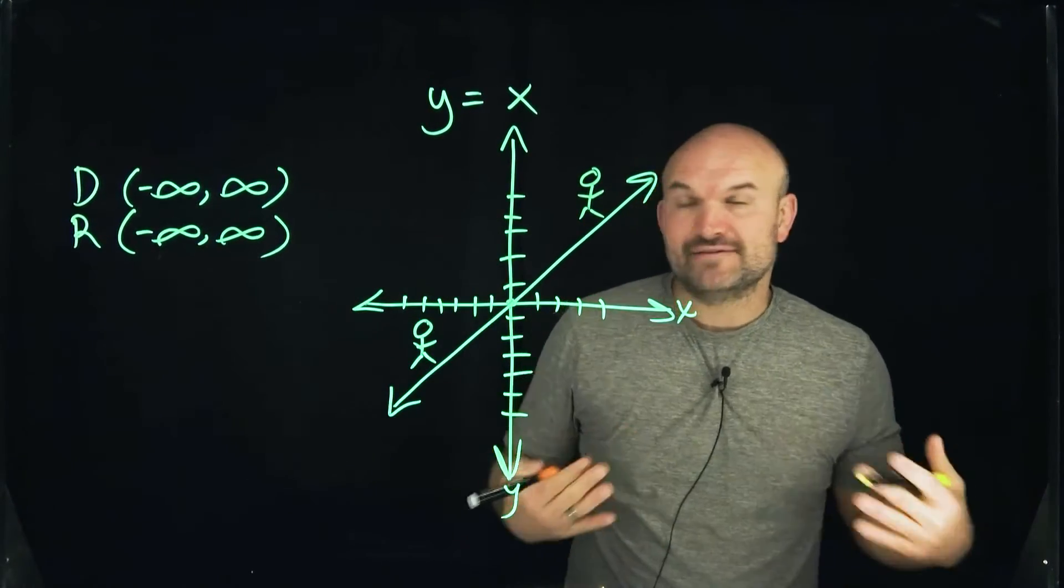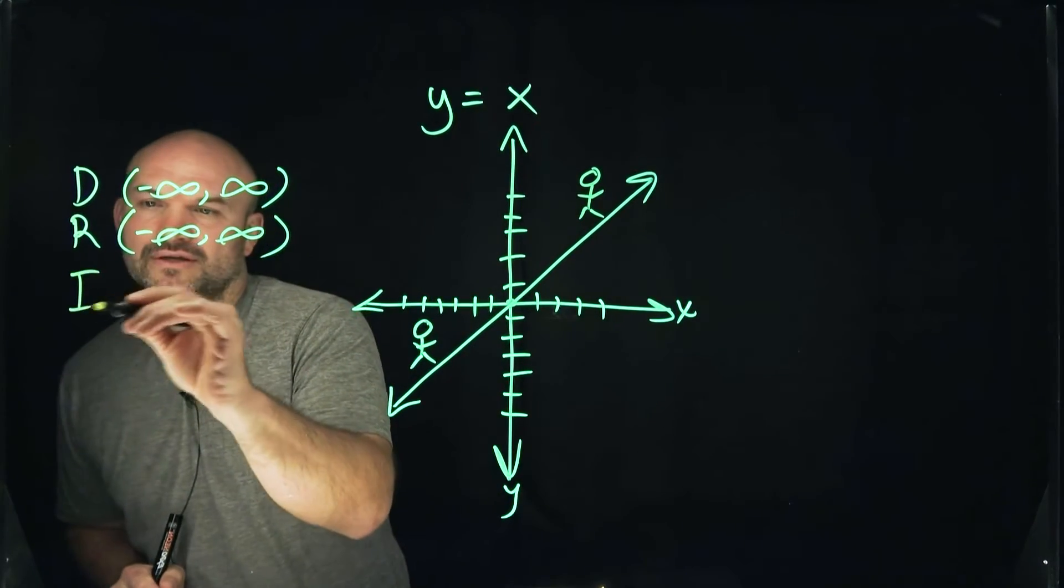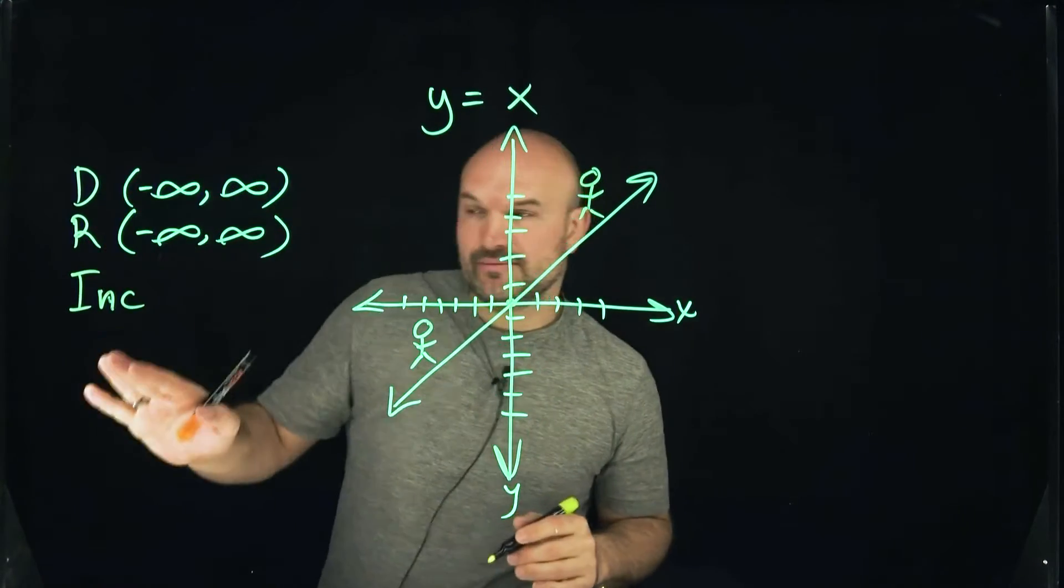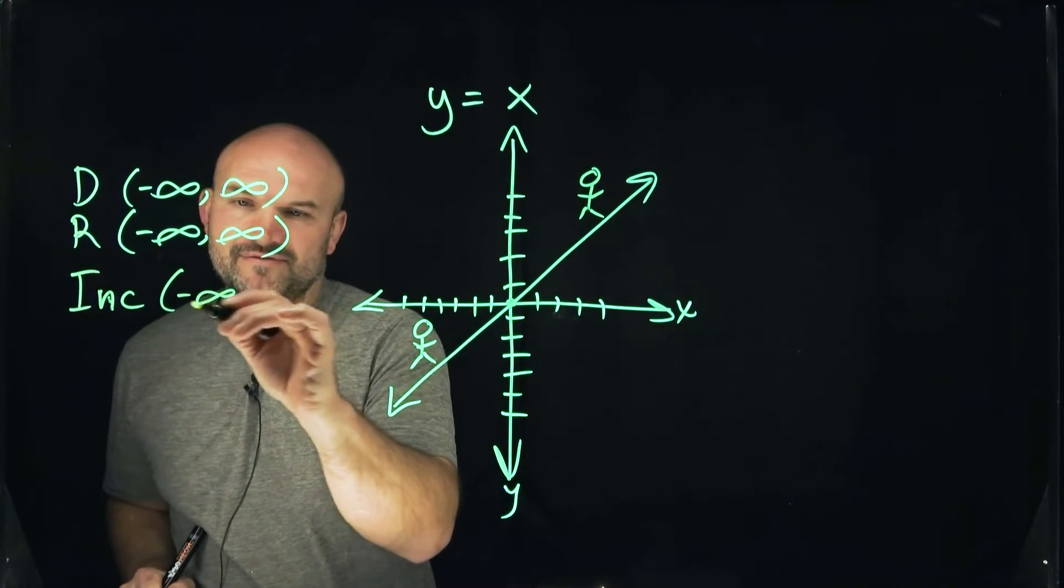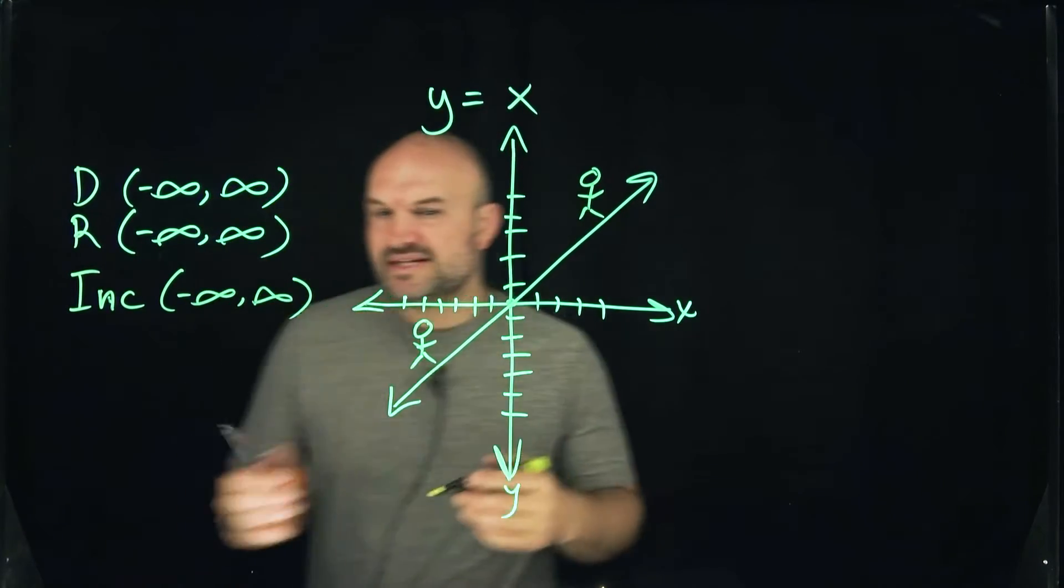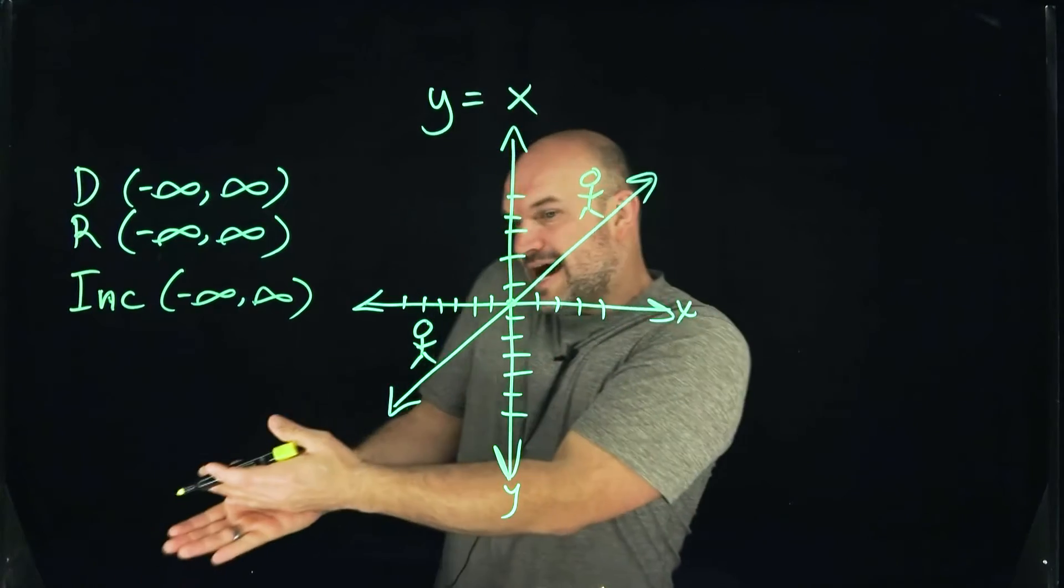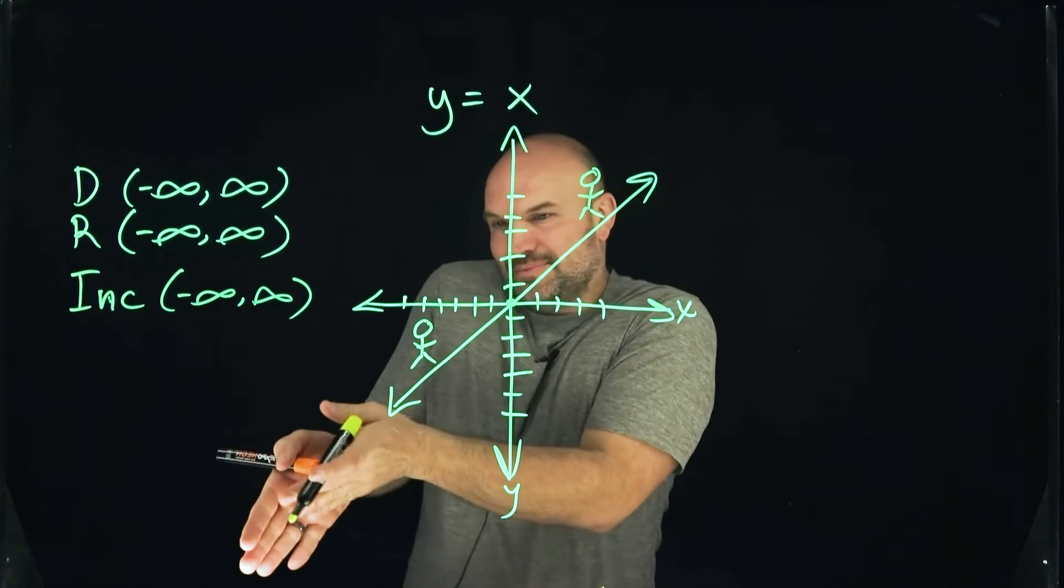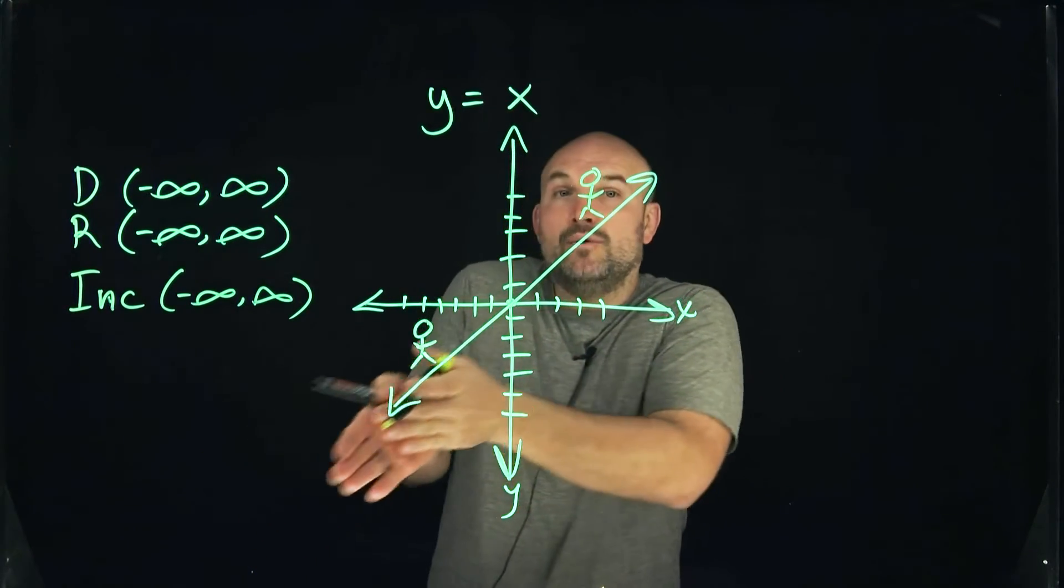Therefore, we can say that the graph is going to be increasing, and we're going to use the interval just like we did with the domain and range. We're going to say from negative infinity to infinity, because no matter how far down to the left we go, as they're going to the right, they're always going to be increasing.